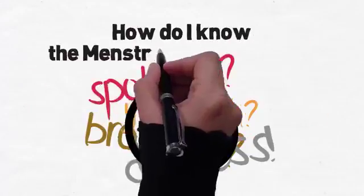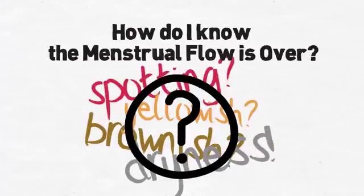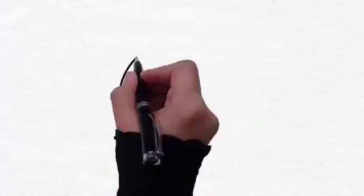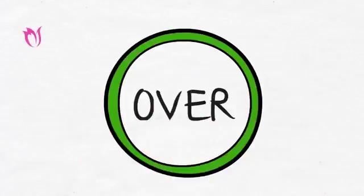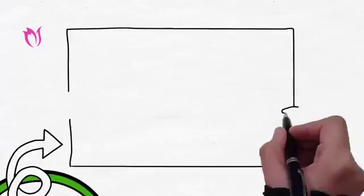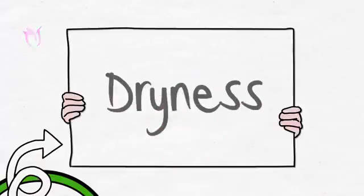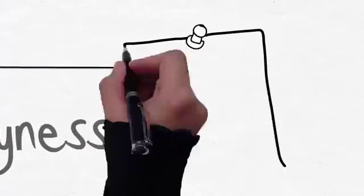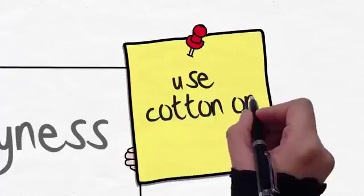How do I know the menstrual flow is over and I can start praying? Basically, your menstrual flow is over when the blood stops and you see complete dryness. You can test that by placing a piece of cotton or a white piece of cloth.